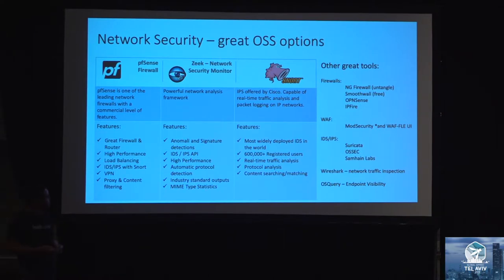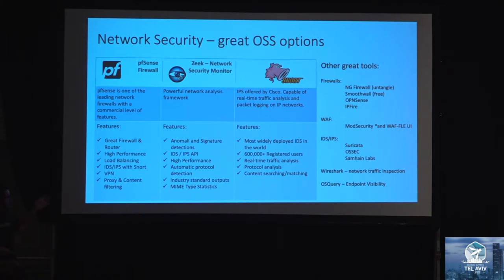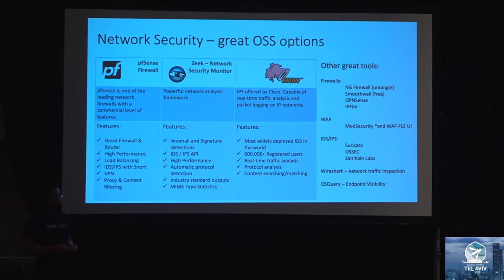Then we have Zeek, which used to be called Bro — they didn't like the association with Big Brother, so they changed the name to Zeek last year. It's the same platform, the same engine based on rules, and it's very powerful. If you try any of these tools you'll be amazed at how well they're built. Snort, for example, is used by companies that offer commercial firewalls like Sophos — Sophos Unified Threat Management has Snort on the backend for all the IDS/IPS part, which is quite a statement.